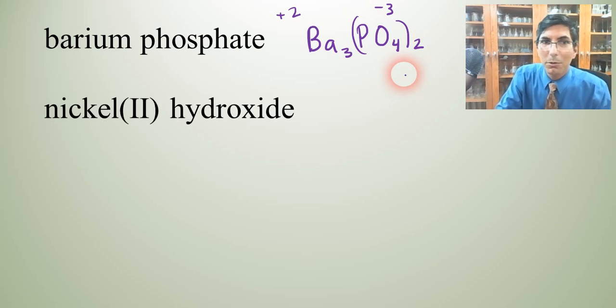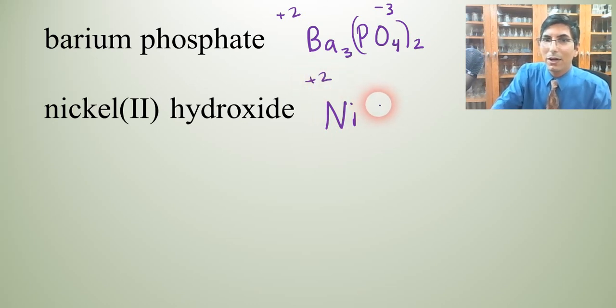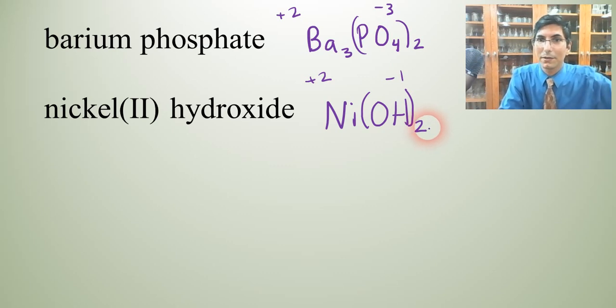Nickel(II) hydroxide. Nickel(II) is Ni with a positive 2 charge. Hydroxide is OH with a negative 1 charge. So we've got to swap those charges. The 2 goes down here on the hydroxide. Don't forget to put the parentheses around hydroxide. Hydroxide is a polyatomic ion, so we have to put the parentheses around that whenever we stick an additional subscript on it.